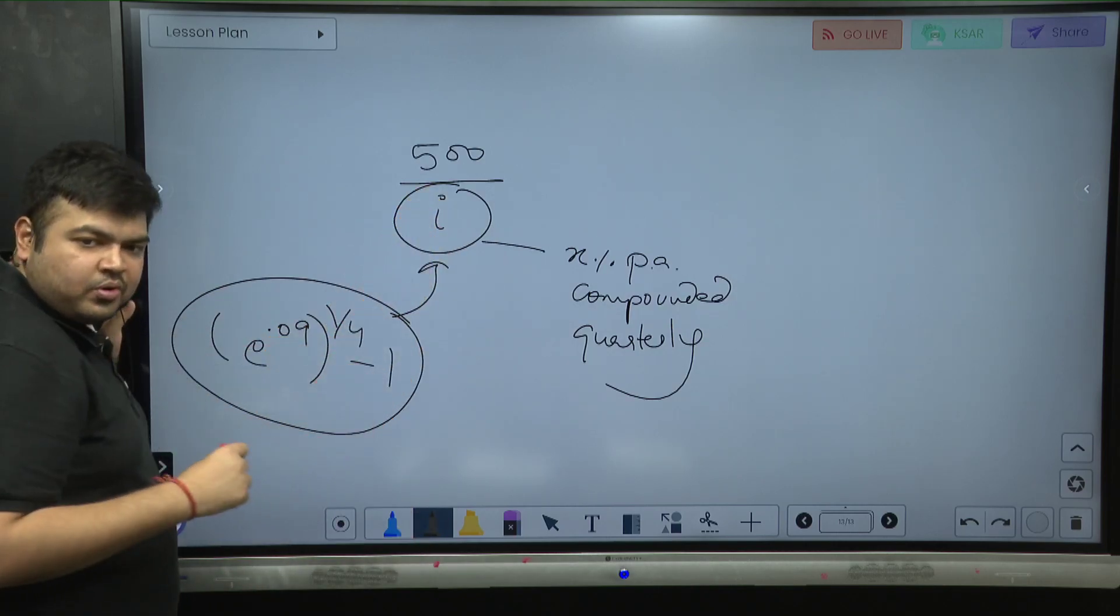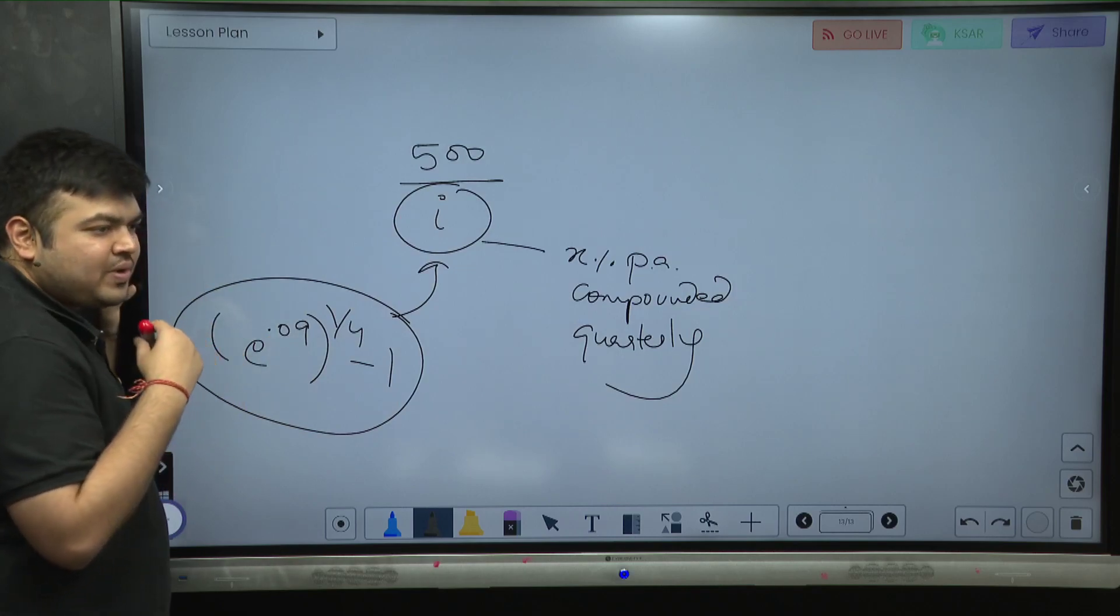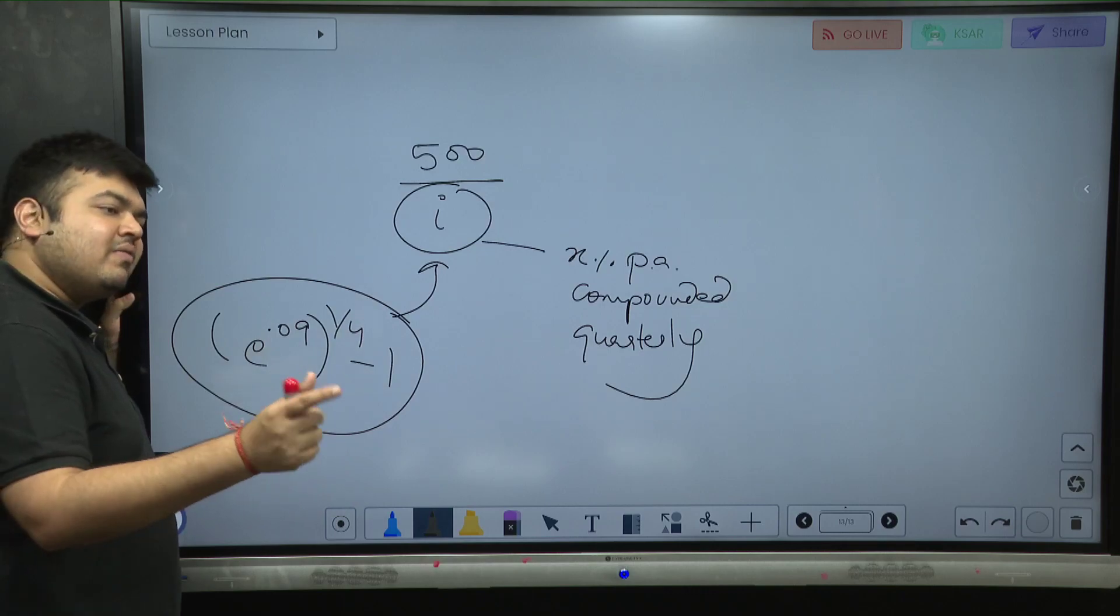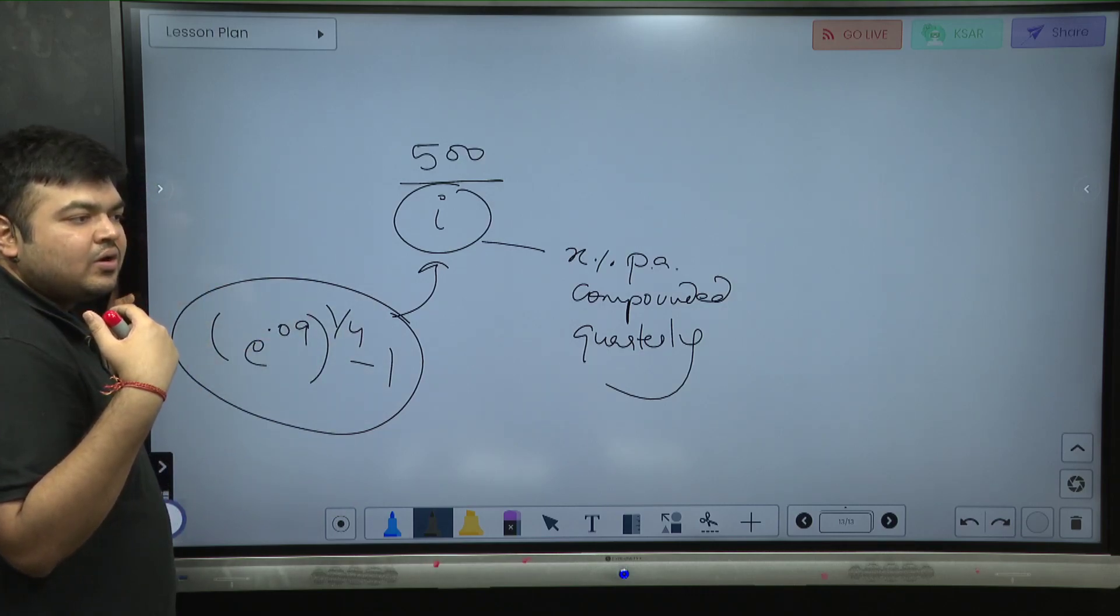Divide by four you can put it over here. You could have solved this question this way also. You can convert - if you know the continuous rate to EAY, EAY says you know how to convert it to anything at all.